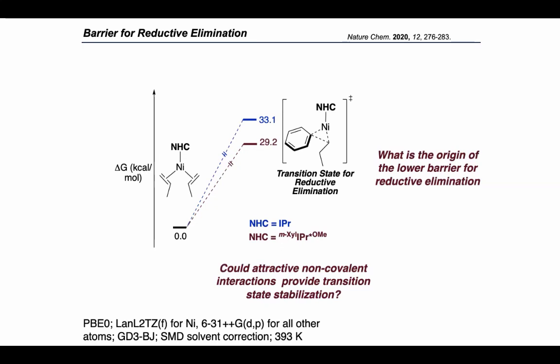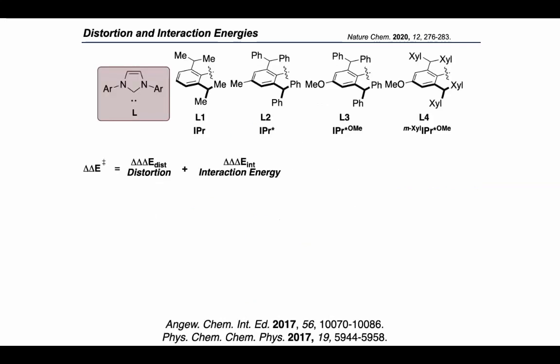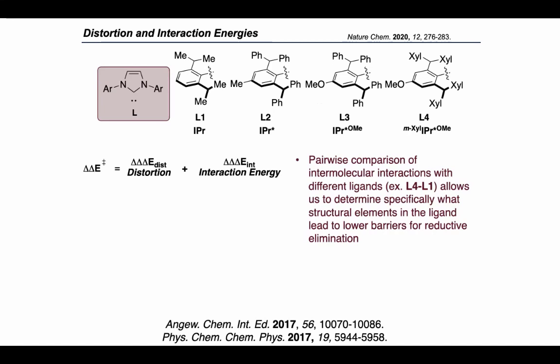To explore whether some other non-covalent interactions were present in the transition states to account for this difference, we turned to computational analysis of the distortion energies and interaction energies with a variety of NHC ligands shown at the top of the slide. The distortion energy is the energy of how much the catalyst needs to physically distort to reach the transition state geometry from a relaxed geometry, and the interaction energy is a lump sum of many different intermolecular interactions in the secondary coordination sphere of the ligand. By comparing all these energies in a pairwise manner with the different NHC ligands, we can identify which specific structural elements of the NHC ligand allow for stabilization of the reductive elimination transition state.